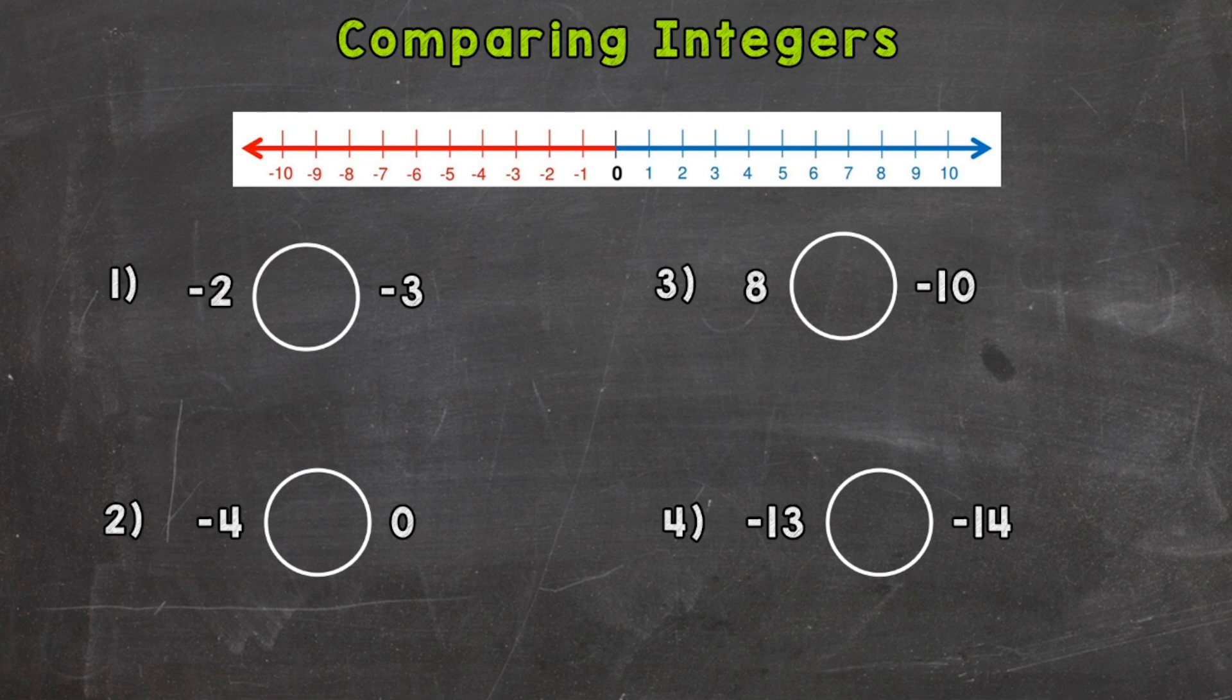There's also a number line at the top of your screen that we're going to use to help us with a couple of these comparisons. So let's take a look at number 1 where we have negative 2 compared to negative 3. And I'm going to use the number line for this one. So I'm going to mark where negative 2 and negative 3 are on the number line.